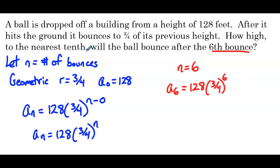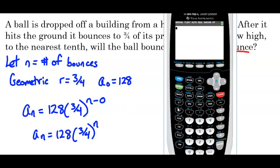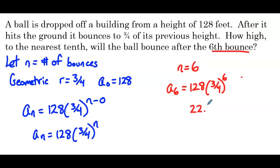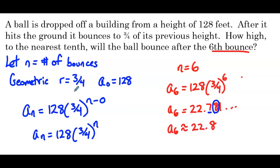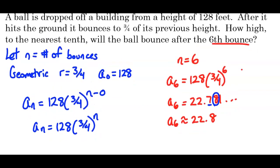Since it says to the nearest tenth, we'll need a calculator. So we have 128 times 3 divided by 4 to the sixth power, which gives us 22.781. To the nearest tenth, we look at the hundredths digit, and a sub 6 rounded is 22.8.